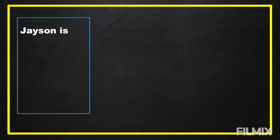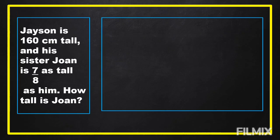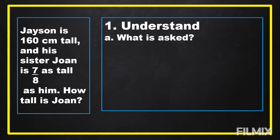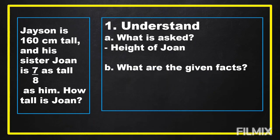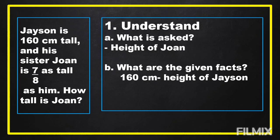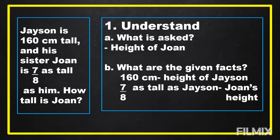To solve our problem, we are going to understand. We are going to know what is asked in the problem. It is asking for the height of Joanne. What are the given facts? 160 cm is the height of Jason, and 7/8 as tall as Jason is Joanne's height.